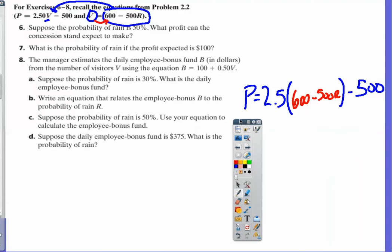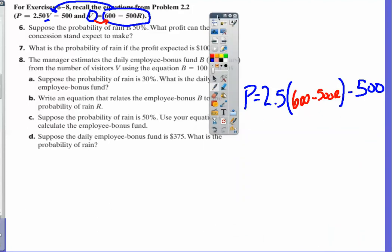From there, we said, what does it mean when a number is next to a term in parentheses? It means you have to distribute it. 2.5 times 600 is 1,500.